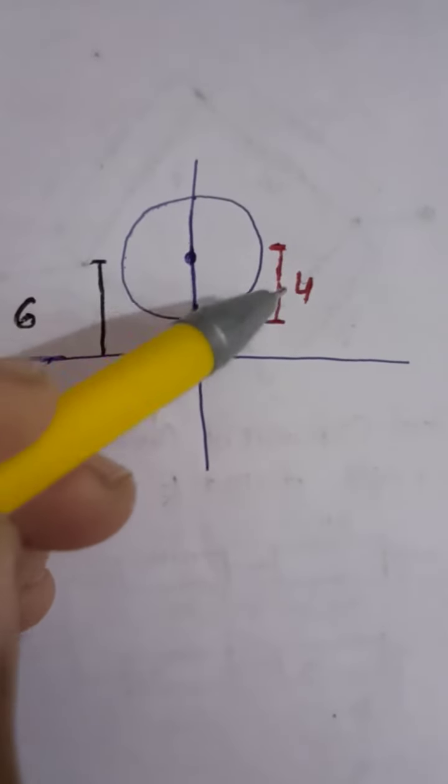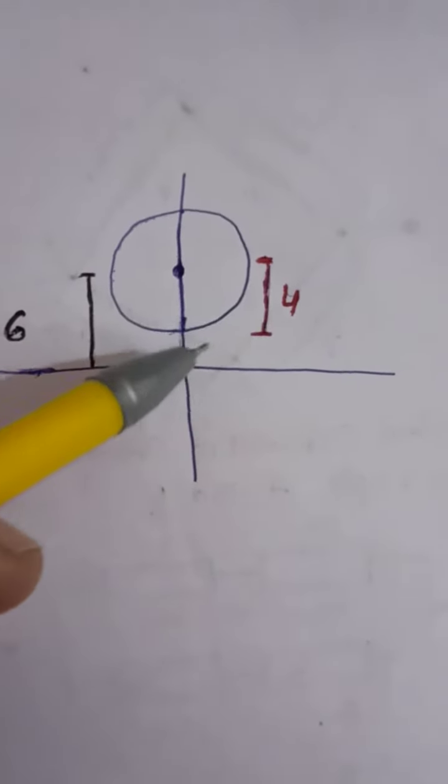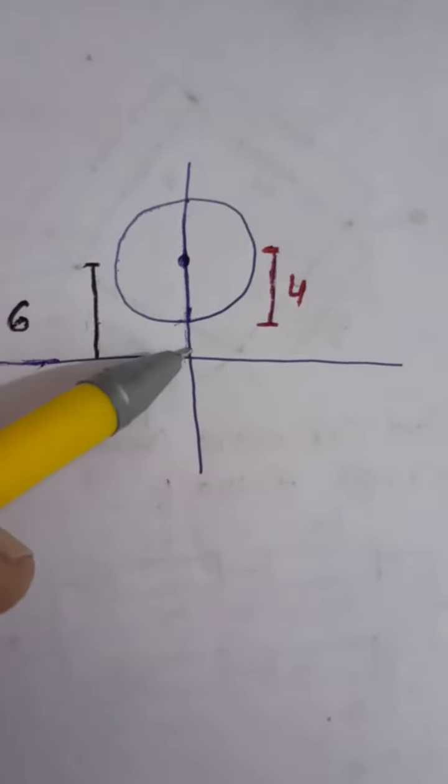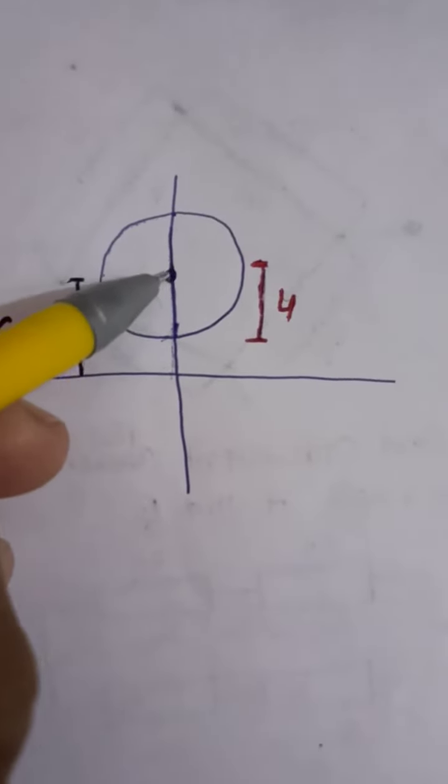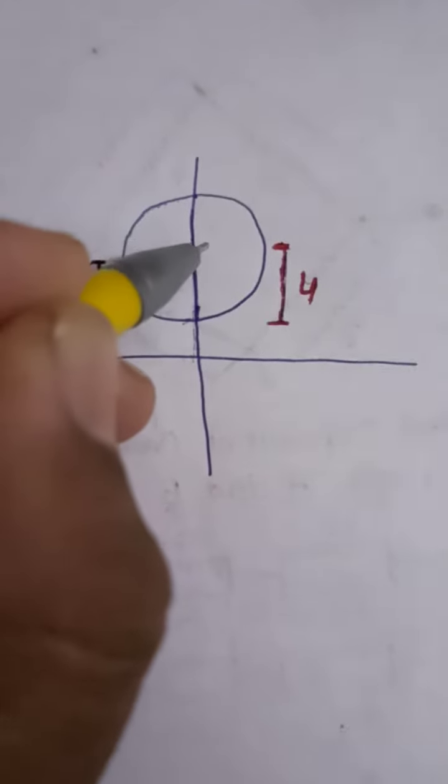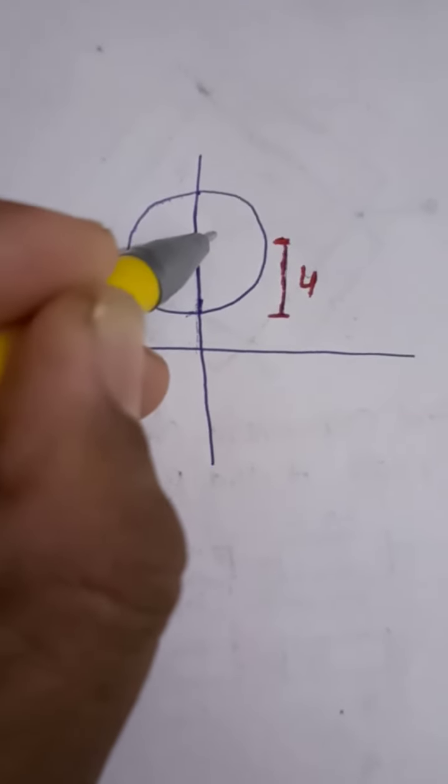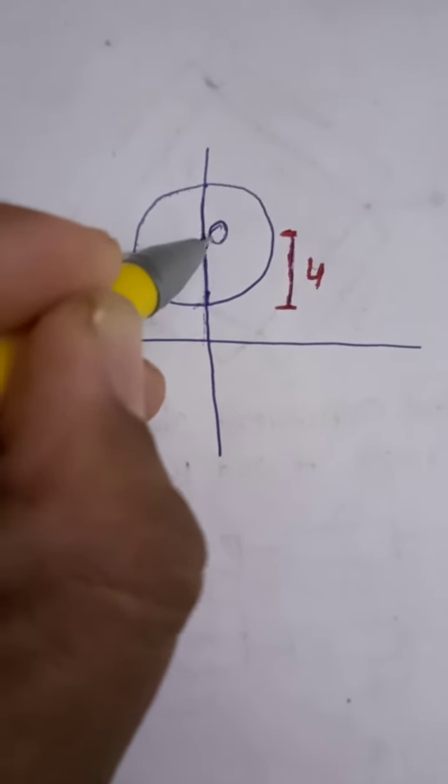You can see that this is the radius. With the help of these two concepts we can easily find the center coordinate. On the y-axis, the x coordinate will be zero but the value of y will be six.